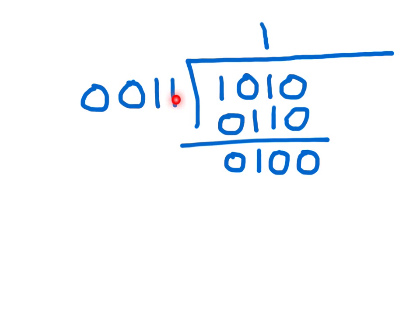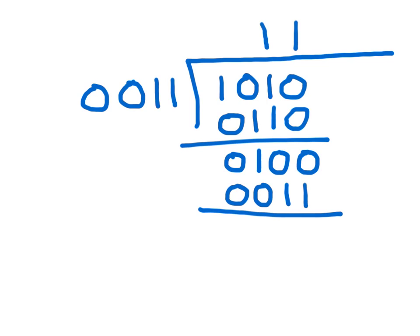Now, 3 goes into 4 one time. If we multiply 1 times 3 we get 011. If we subtract — 4 minus 3 is 1 — we are left with 1. The answer is 3 with a remainder of 1. I recommend that you practice this on your own with problems that you know the answer to, so that you can see how it works out.